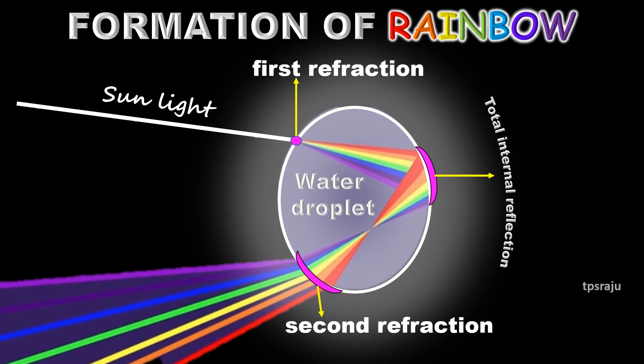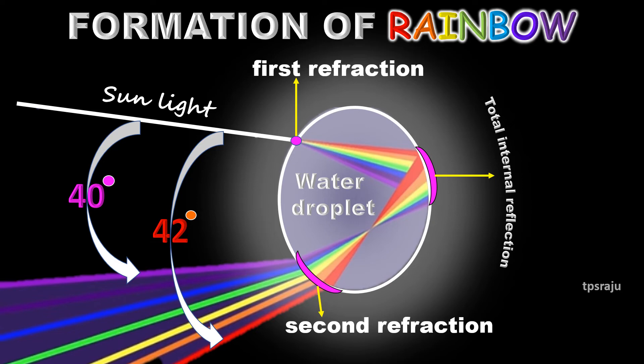The color red will be seen when the angle is 42 degrees, while violet color will be seen when the angle is 40 degrees. If we look at angle between 40 degrees and 42 degrees, we will observe the remaining colors of VIBGYOR.